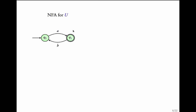Let us start with an example. Suppose this is an NFA for some u. This NFA accepts A, ABA, ABABA, and so on — words of the form A(BA)*. This characterizes a language over finite words. Now, to get to u^ω, the first step would be this.